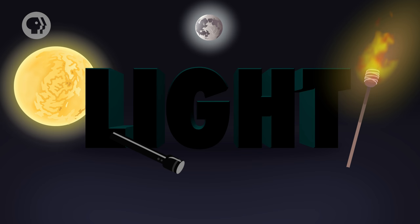Sunlight, moonlight, torchlight and flashlight – they all come from different places, but they're all the very same thing – light. It's what makes it possible for us to see the world around us, so it's worth a close, hard look.